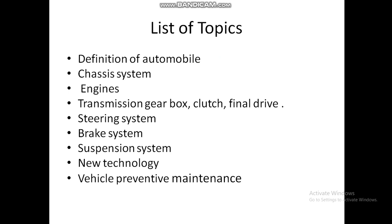Today we will discuss different types of topics. The list of topics includes: definition of Automobile, chassis system, transmission, gearbox, steering system, brake system, suspension system, and new technology used in Automobiles at present time.